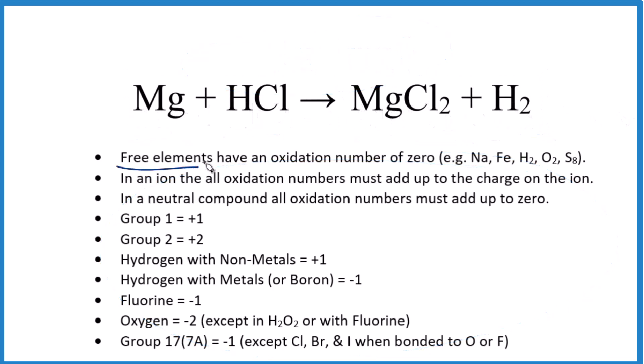So free elements, these are elements of just one type of atom like Na, Fe, H₂, they have an oxidation number of zero. So just Mg, oxidation number zero. And here just H with this H₂ by itself, zero.